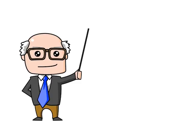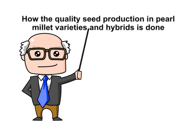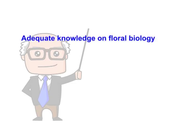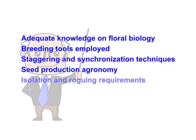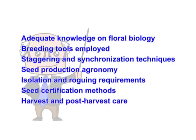In this session, you learnt how quality seed production in pearl millet varieties and hybrids is done scientifically, with adequate knowledge on floral biology, breeding tools employed, staggering and synchronization techniques, seed production agronomy, isolation and roguing requirements, seed certification methods, and harvest and post-harvest care. In the next session, we will cover the seed production technology of red gram varieties and hybrids.